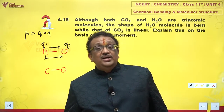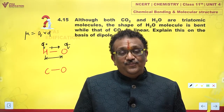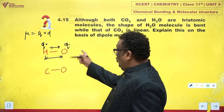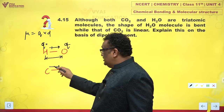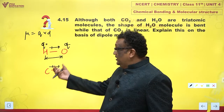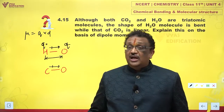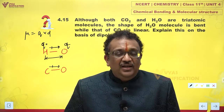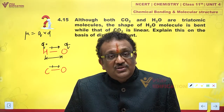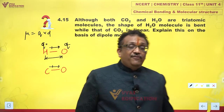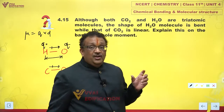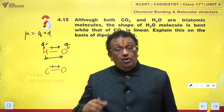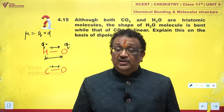This dipole moment is a vector quantity. If you have a polar molecule — the OH and CO bonds are polar. They are polar bonds because in these cases, oxygen atoms acquire a minus charge and hydrogen or carbon atoms acquire a slightly plus charge. So, if you have a polar bond like this, the molecule is also expected to be polar, because if you have polar bonds, the overall molecule should also be polar.